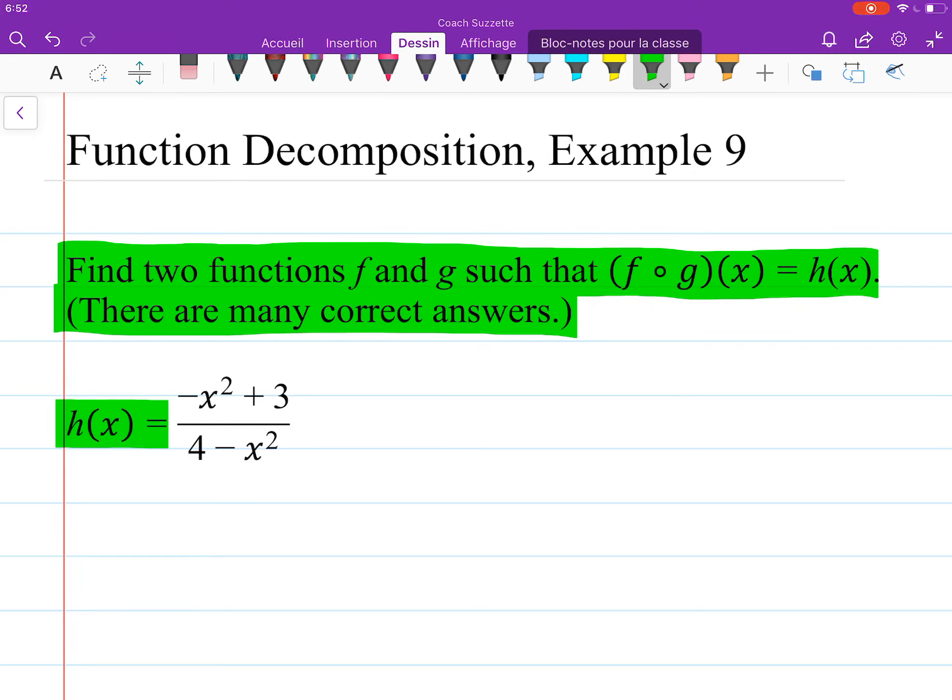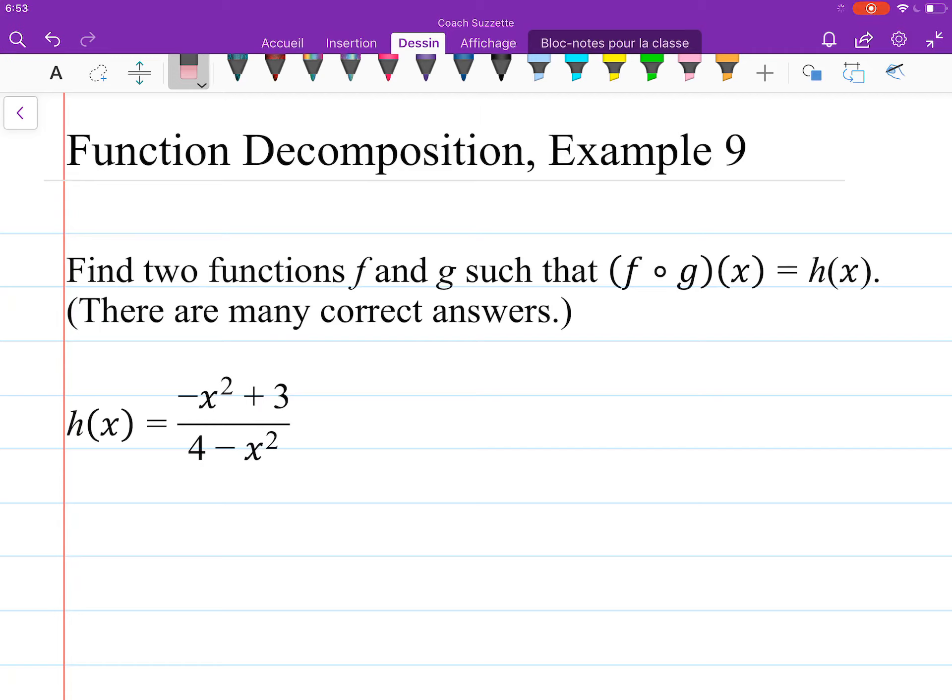h of x is equal to negative x squared plus 3 divided by 4 minus x squared. So we need to look for inner and outer functions where g of x is the inner function, f of x is the outer function.